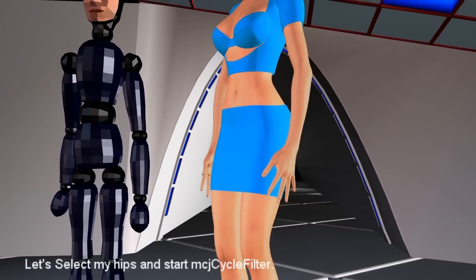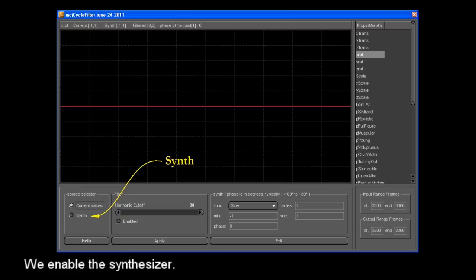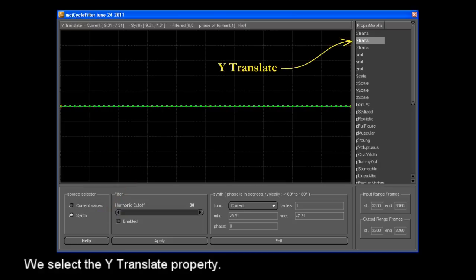Let's select my hips and start MCJ Cycle Filter. We enable the synthesizer.